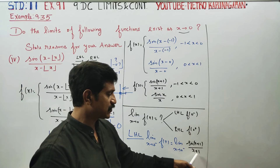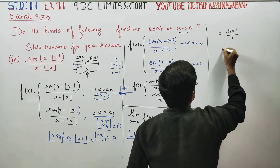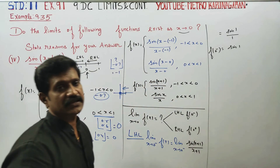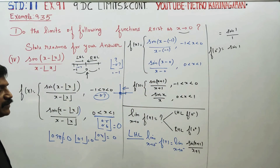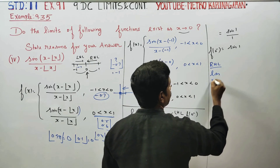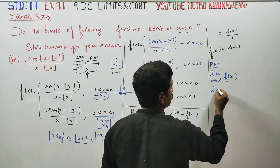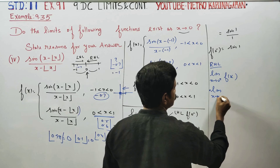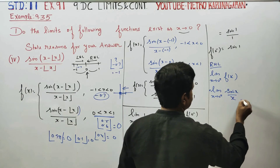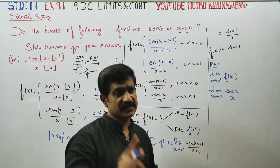If you substitute 0, sin(1) divided by 1 equals sin 1. So the left-hand limit f(0 minus) is sin 1. Now taking the right-hand limit: limit x tends to 0 plus of f of x equals limit x tends to 0 plus of sin(x) by x. As x tends to 0, sin(x) by x is a standard formula equal to 1.